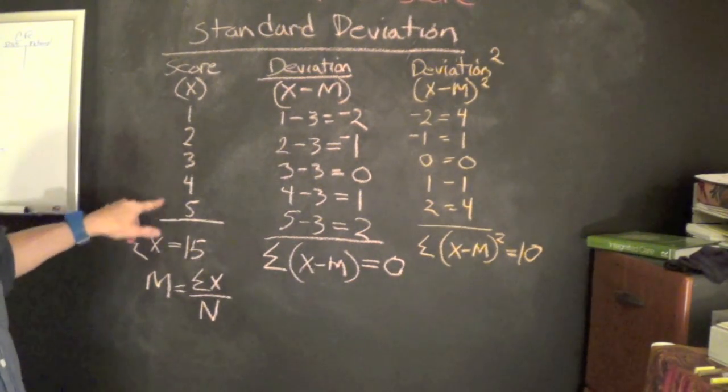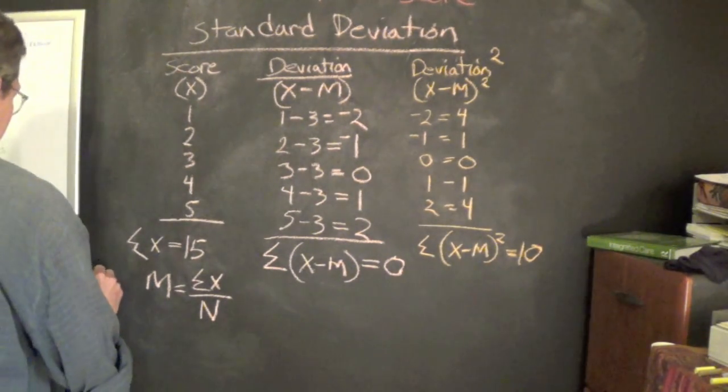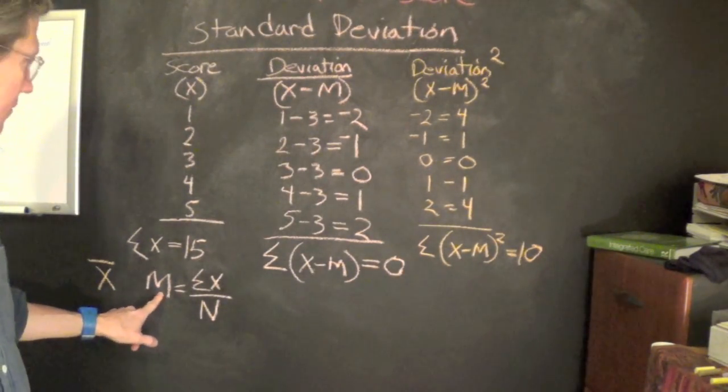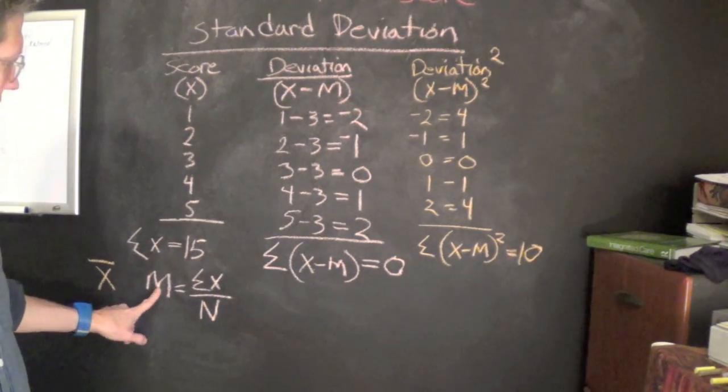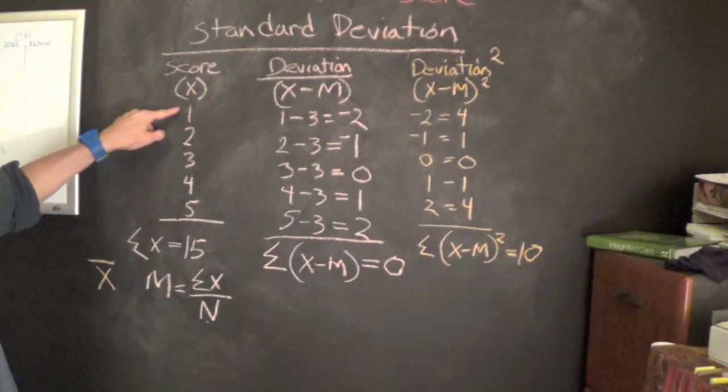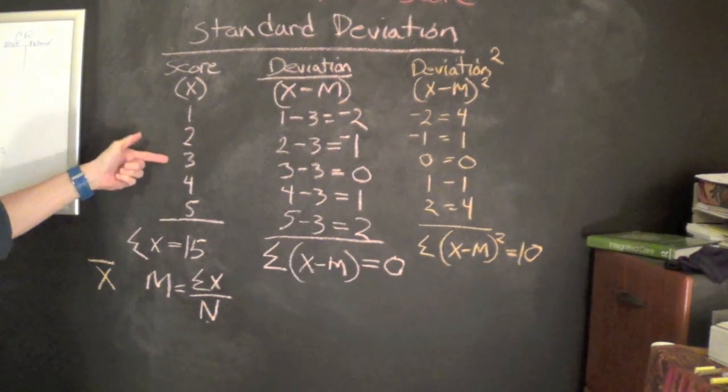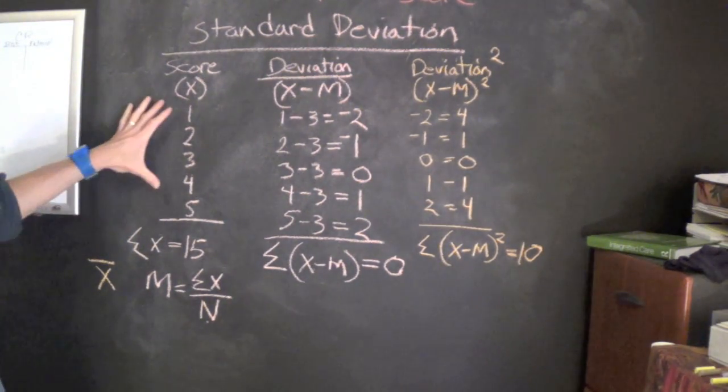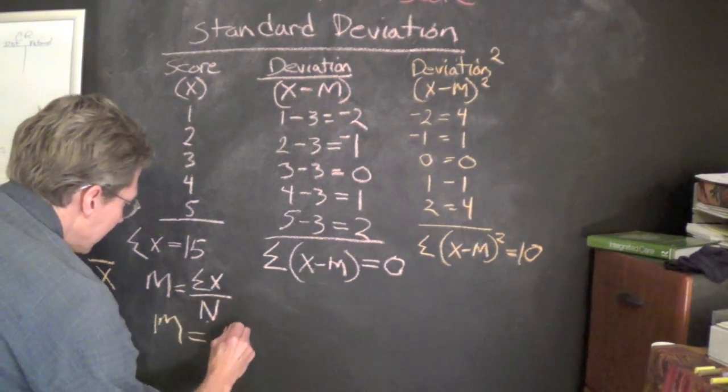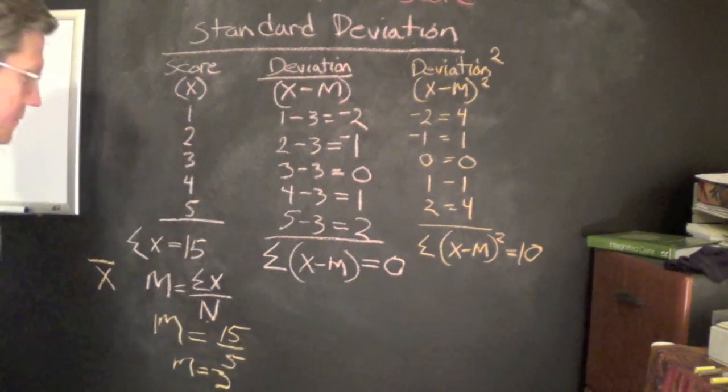And then we want to determine the mean of these scores. Mean is also represented as a line over X. Let's just keep it as M for right now. M equals mean, so we take the sum of the scores 15 divided by the number of students who took the scores, which was five. Their scores totaled 15, but we had five students take it. So 15 divided by five. Our mean is equal to three.